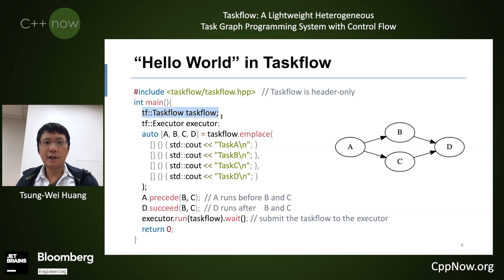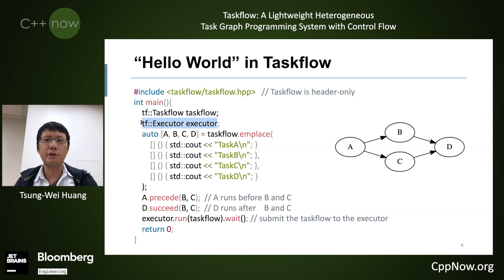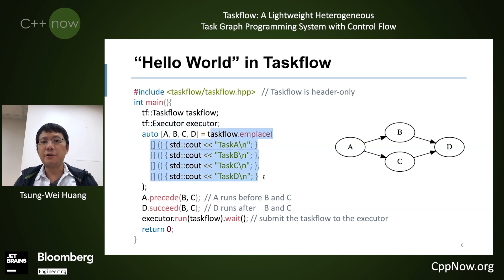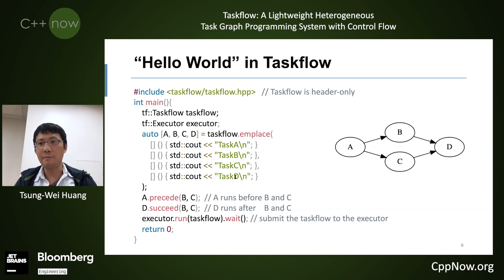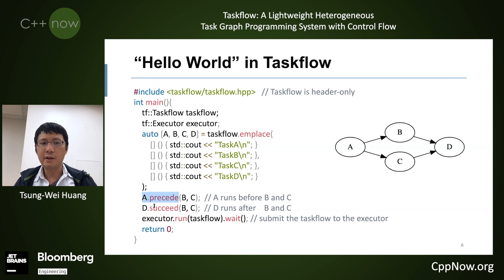You create a Taskflow object, which is the gateway class for you to create a task dependency graph. You can create tasks and dependencies. Finally, you define an executor, which is the execution unit for you to submit a taskflow to run. Within the taskflow, you create four tasks as C++ lambda function objects — task A, B, C, D — each printing a message of their ID. You define dependency using the precede method: A runs before B and C, D runs after B and C. Then you submit the taskflow to the executor, which invokes the scheduler to execute the task graph.